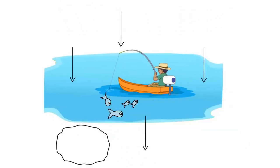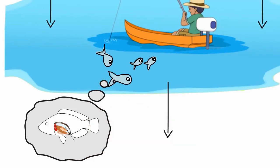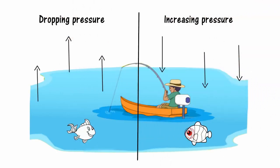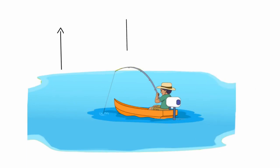It affects the air in their organs, especially their swim bladder which manages buoyancy. Imagine a fish feeling gassy and bloated during increasing pressure and feeling relieved during dropping pressure.